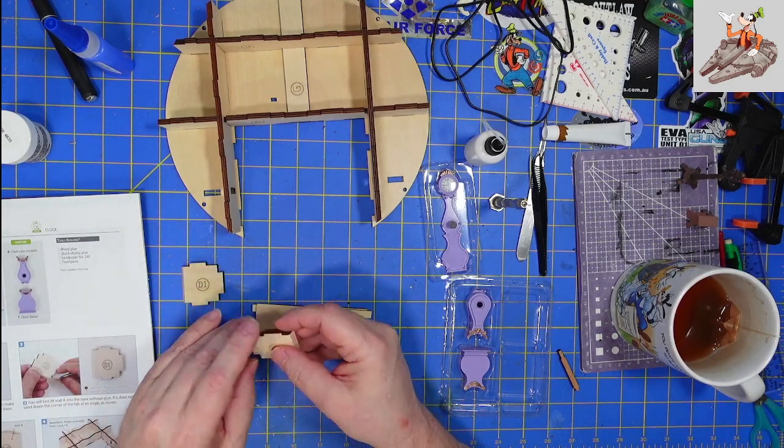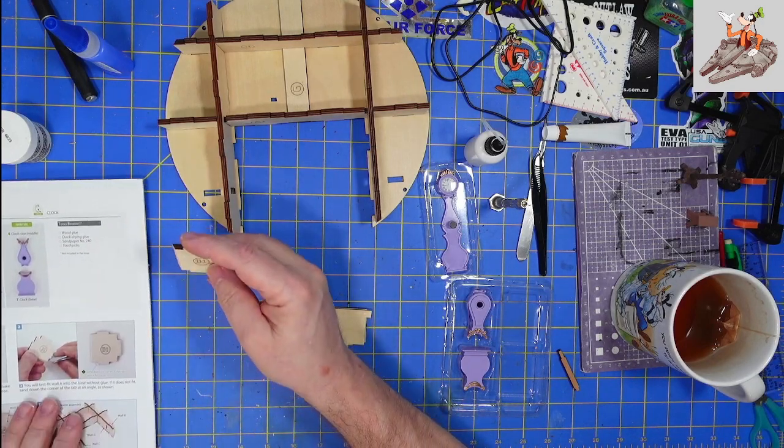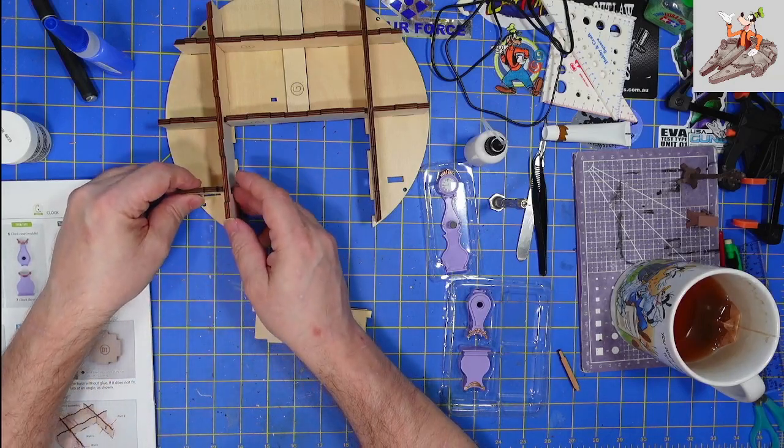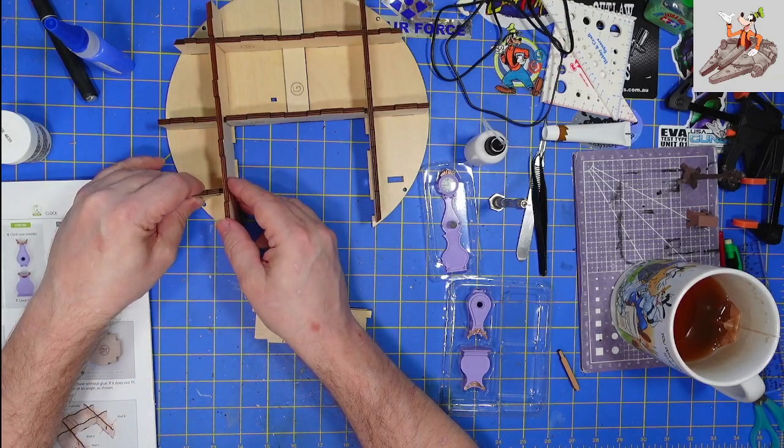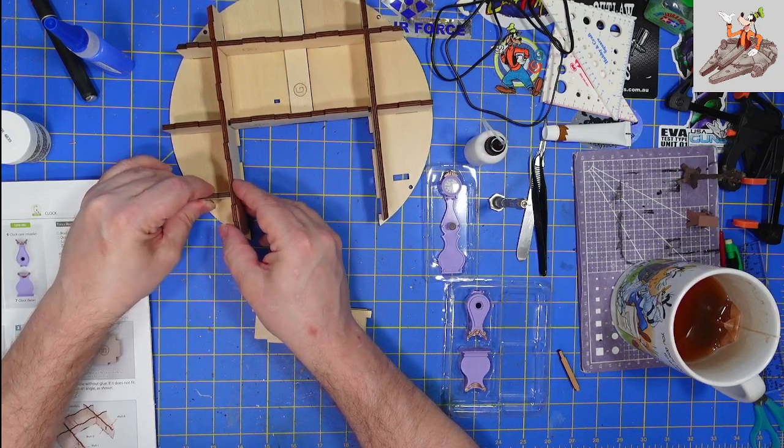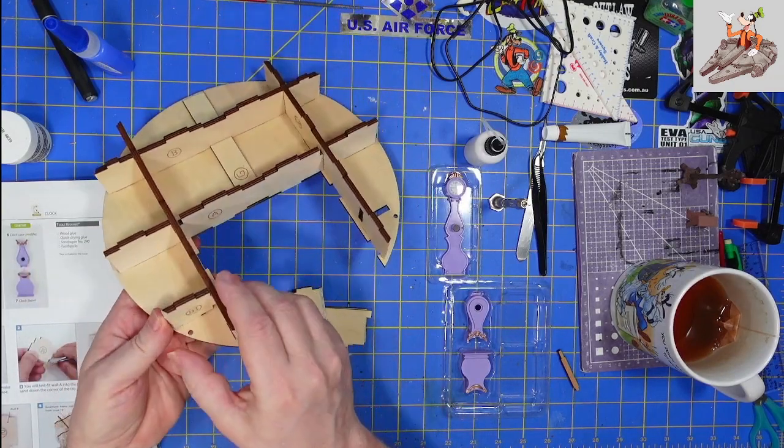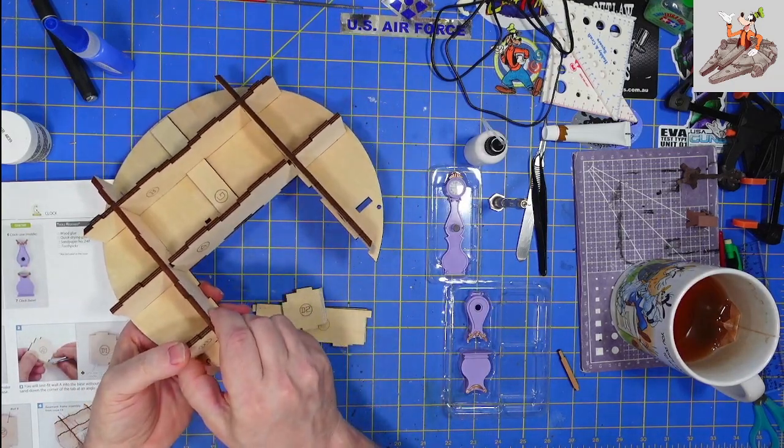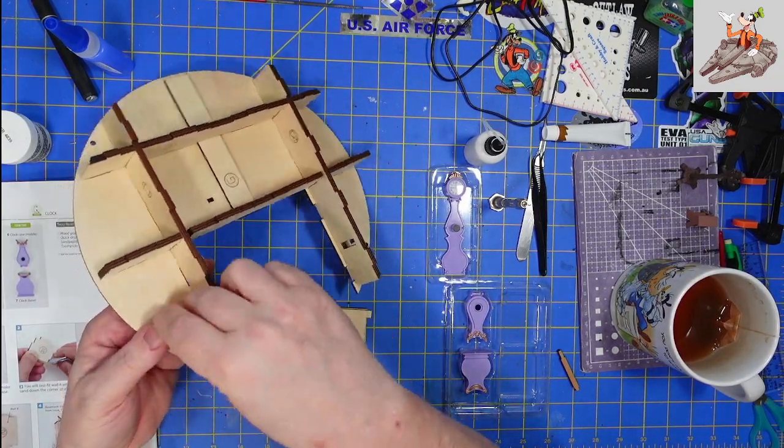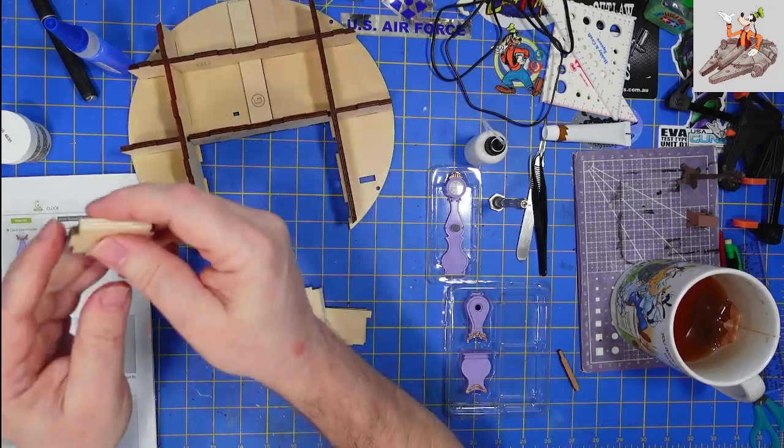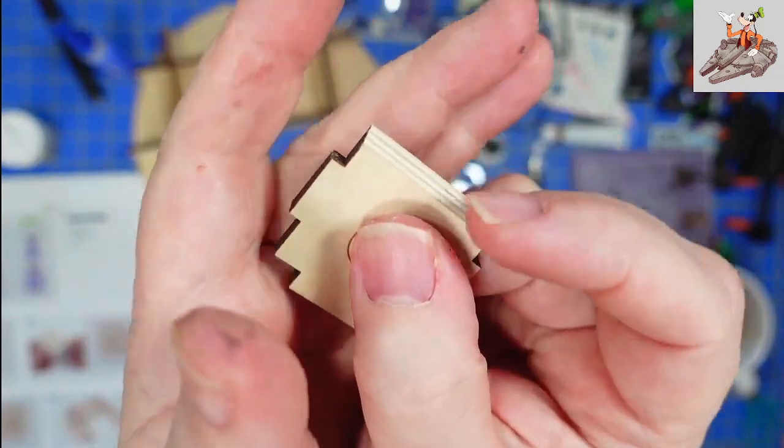So it says on wall D1 to lightly sand this corner, meaning that it may not fit. Matter of fact, it won't fit because the way it's put in here. Maybe it'll pop in there. Yeah, it will. But now I've got to get it back out.